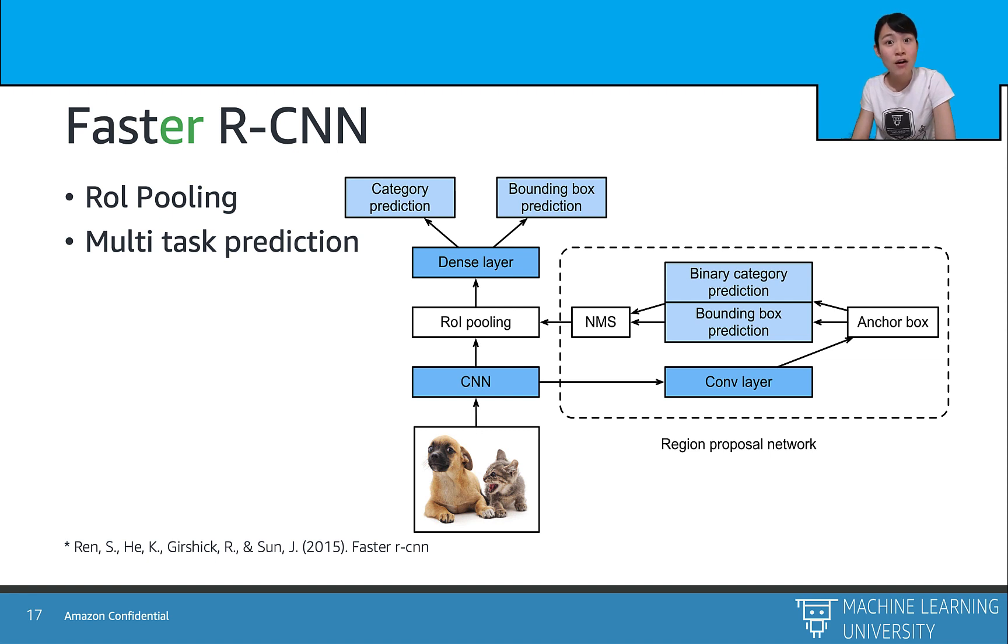And that's all for the region-based convolutional neural networks, which is one branch of approach for the object detection task. And next, we will explore another approach where we only process the whole image once, that is the YOLO method.